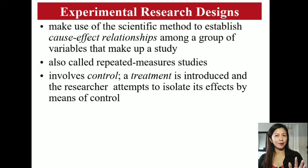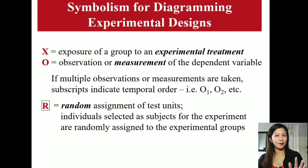Experimental designs make use of the scientific method to establish cause-and-effect relationships between or among a group of variables. Studies using these designs are also called repeated measures studies, which involve control and a treatment introduced by the researcher to isolate effects. In diagramming experimental designs, X symbolizes experimental treatment, O represents observation or measurement, subscripts are used for several measurements, and R denotes random assignment.